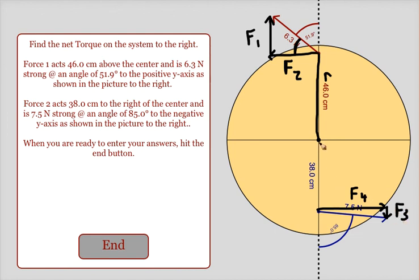Force four is the one that's perpendicular to our radius, so we'd multiply the radius times the force four, and that would get us our torque.